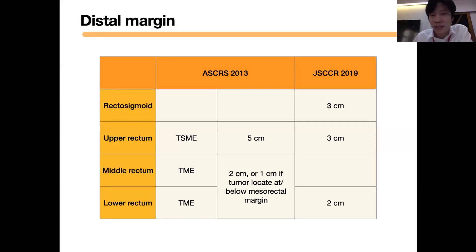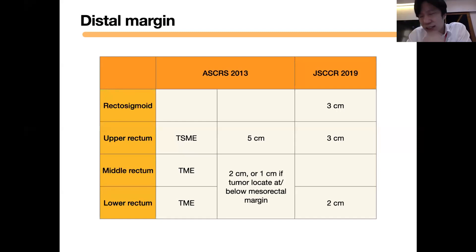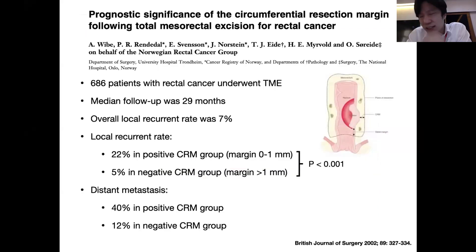Another margin to consider is the circumferential resection margin. If CRM is less than one millimeter, the chance of distant metastasis is much higher and the local recurrence rate is much higher — you must respect the TME plane. In some tumors, if preoperative imaging shows that the CRM is threatened, you might need to consider extended resection or multivisceral resection of the adjacent organ. If you respect the TME plane and maintain a good circumferential resection margin, the oncologic outcome will be better.